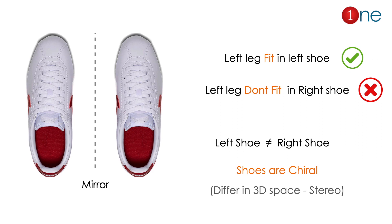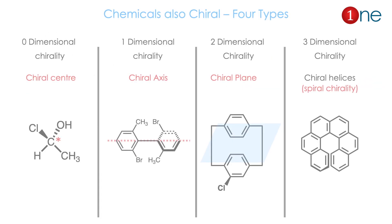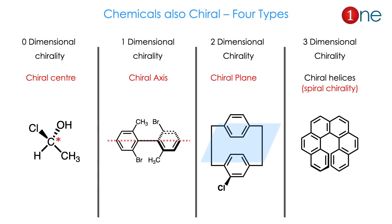You should know: chiral means three-dimensionally different structures. Chemicals also can be chiral, and it is classified into four types: zero dimension, one dimension, two dimension, and three dimension.